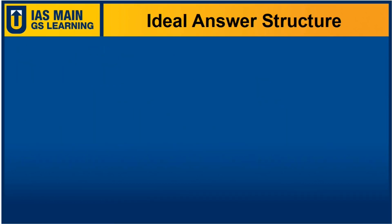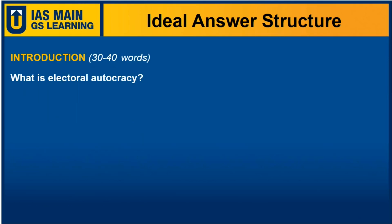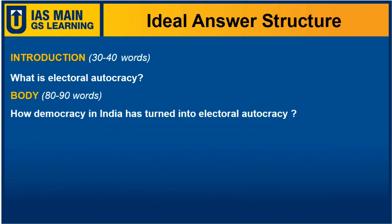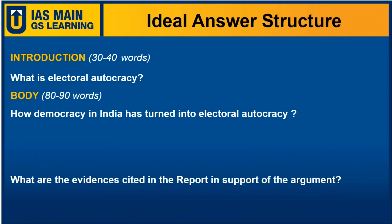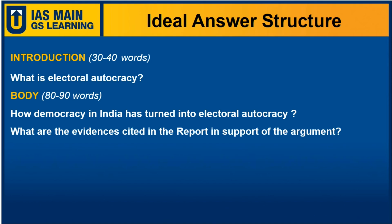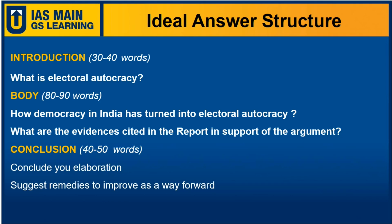Just have a look at the answer structure: introduce with what is electoral autocracy; in the body part, discuss how democracy in India has turned into electoral autocracy and what are the evidences cited in the report in support of the argument; and you can conclude your answer with your observations made. You can also suggest remedies to improve as a way forward.